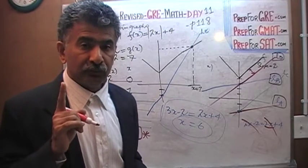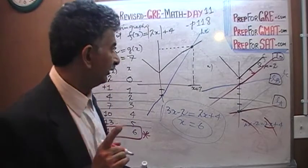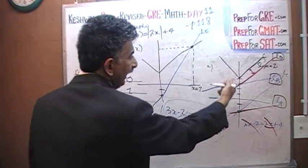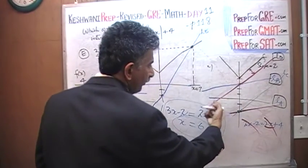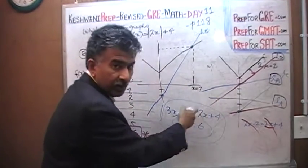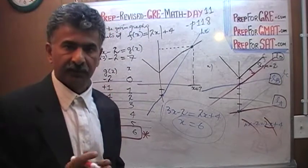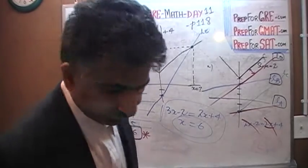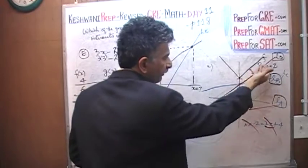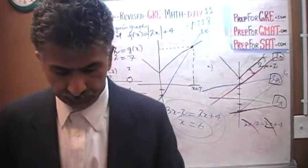Answers A and B would have had a point of intersection with the original graph had the graph continued downward — but because of the absolute value, f(x) has a V-shape. The only intersections that matter are in the first quadrant, in positive territory. Any potential intersection for A or B would have been in the negative territory, which doesn't exist for this graph.